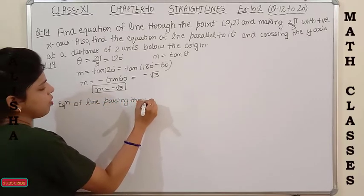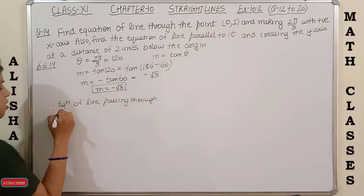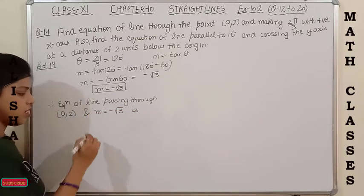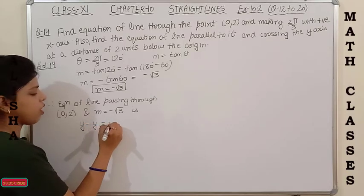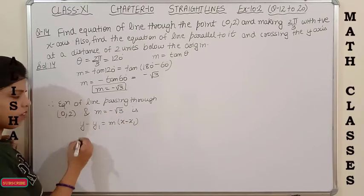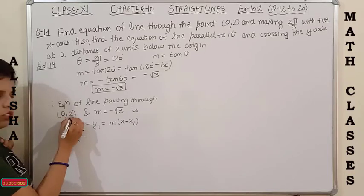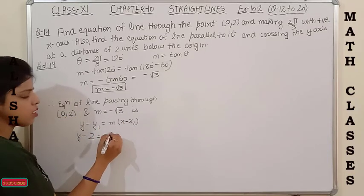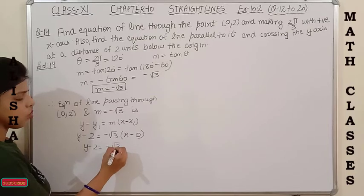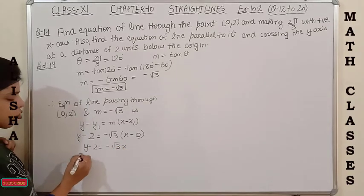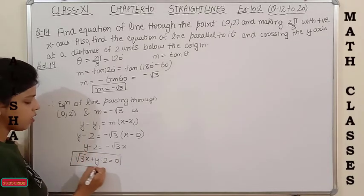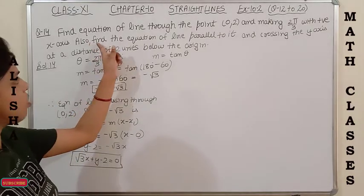Using point-slope form y − y₁ = m(x − x₁) with point (0, 2) and m = −√3: y − 2 = −√3·x. Rearranging: √3x + y − 2 = 0. This is the first part's answer.